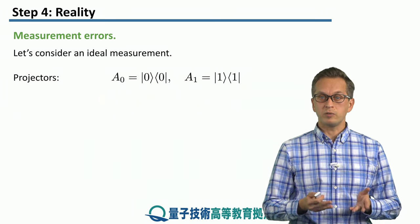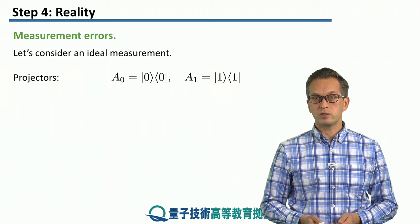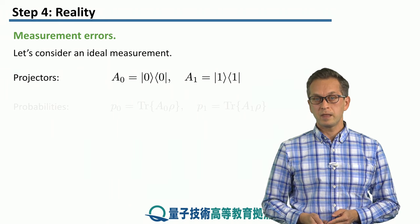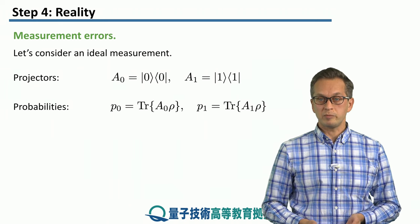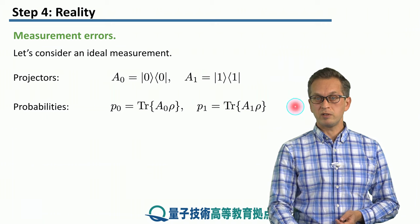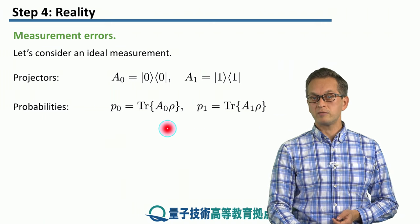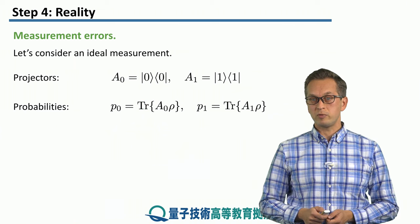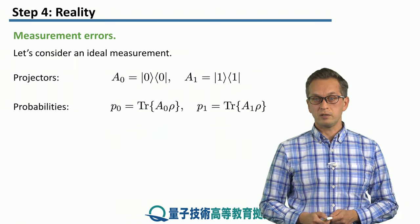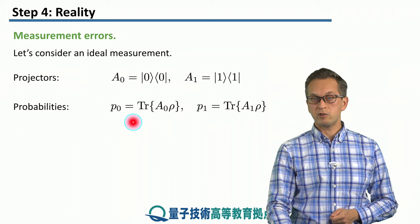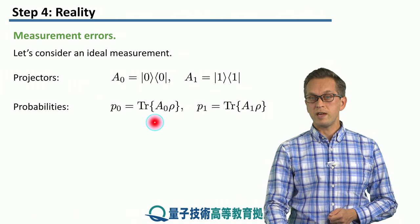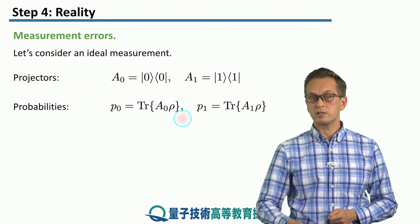The probability that the outcome of our measurement is zero is given by this simple mathematical expression. It's just the expectation value of the projection operator with respect to our state. Or written in terms of the trace, it's just the trace of A0 times the density matrix rho.